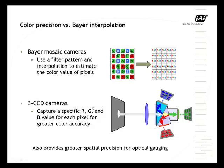A three-CCD camera has a prism block. You image through the prism block, and the prism will then break up the colors — blue, green, and red — and correspondingly image each onto three separate sensors for that same pixel.